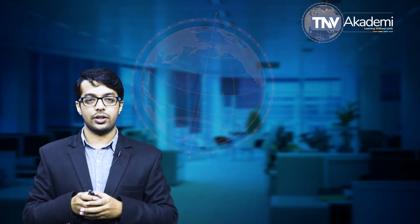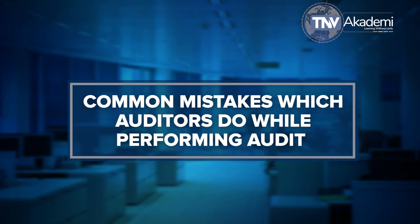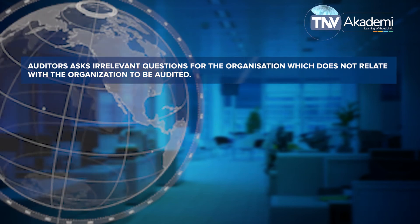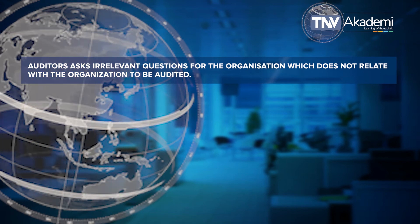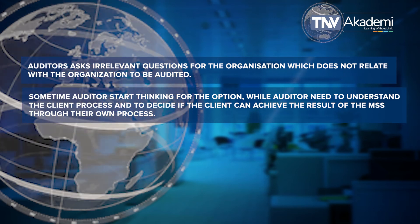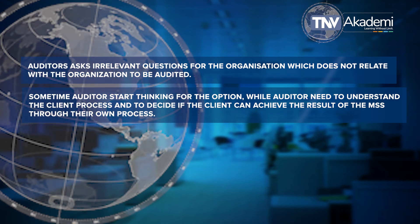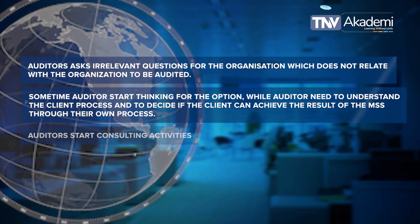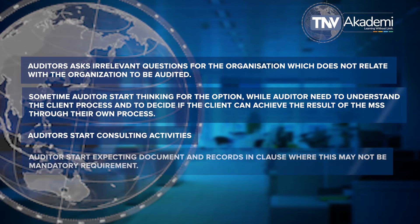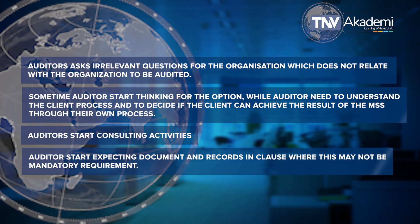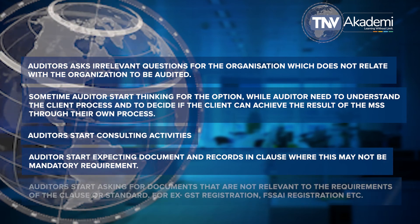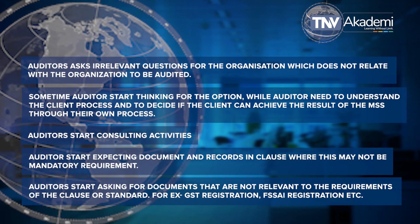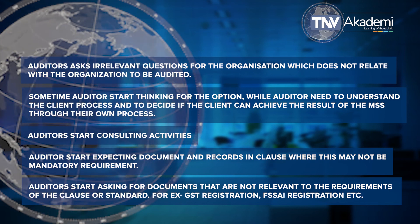Let us understand the common mistakes auditors make while performing an audit under sub-clause 4.1 of ISO 45001:2018. Mistake 1: auditors ask irrelevant questions that do not relate to the organization being audited. Mistake 2: auditors start thinking for options rather than understanding the client process to decide if the client can achieve the results of the management system standard through their own process. Mistake 3: auditors start conducting consulting activities. Mistake 4: auditors start expecting documents and records in clauses where this may not be a mandatory requirement. Mistake 5: auditors start asking for documents not relevant to the requirements of the clause — for example, GST registration, FSSAI registration, etc.